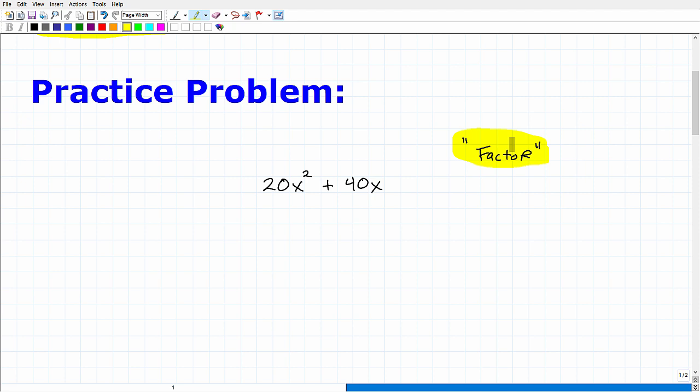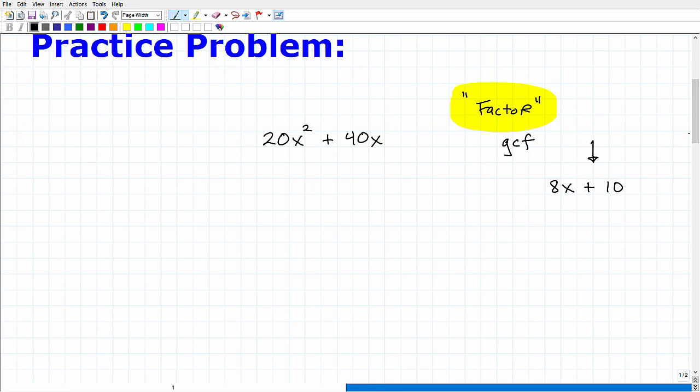What is the hint? Well, first of all, we have to know what factoring means. Factoring means what? This is where we talk about things like the greatest common factor. Let's use a more basic example. Let's say I had 8x plus 10, and I said factor this expression here. What's the greatest common factor is the first thing you should be thinking about when you're being told to factor something.